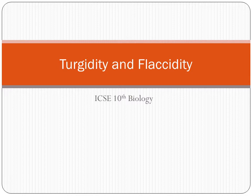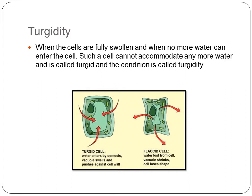Let's start with today's topic of turgidity. The root hairs of a plant cell are permeable to water. The cell sap inside the vacuole contains salts and sugars and is highly concentrated. If the cell is surrounded by water, osmosis will cause water to enter this cell sap. As a result, the vacuole would try to expand more and more.